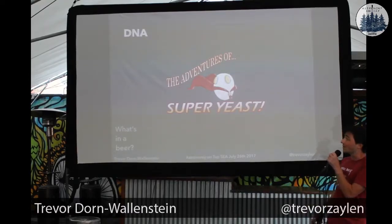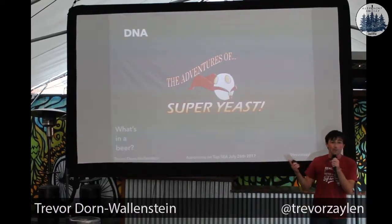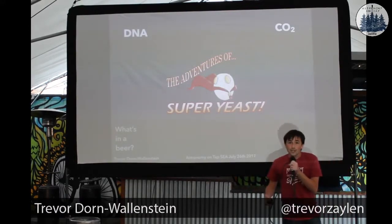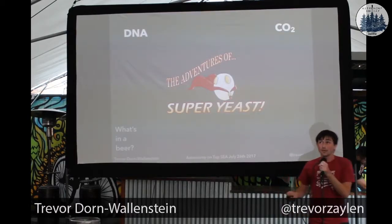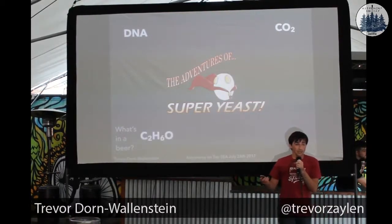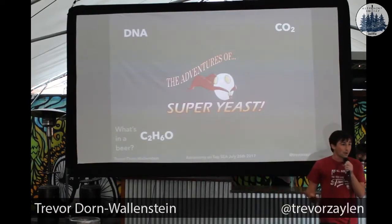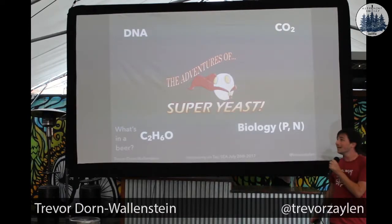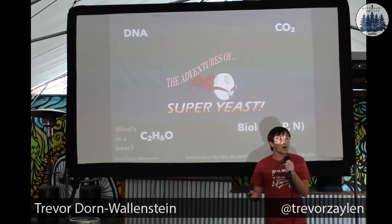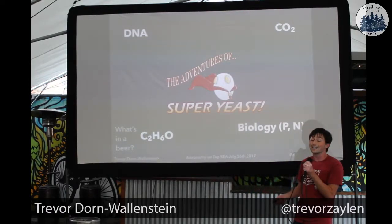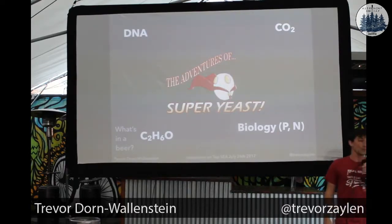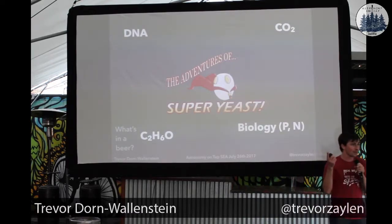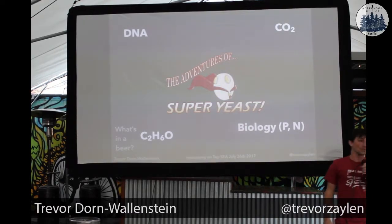Yeast — while it's living, it's got DNA: hydrogen, carbon, oxygen, nitrogen, phosphorus. Not that complicated. As part of the chemical reactions that yeast does to make us beer, it produces carbon dioxide — carbon, oxygen — and it also produces ethanol, the alcohol that winds up in our beer: carbon, hydrogen, oxygen. All of its biological reactions are very complicated, but all of them involve hydrogen, carbon, oxygen, plus phosphorus and nitrogen.